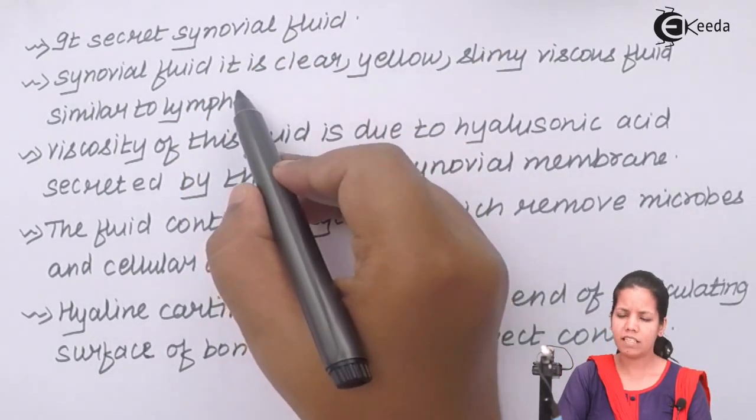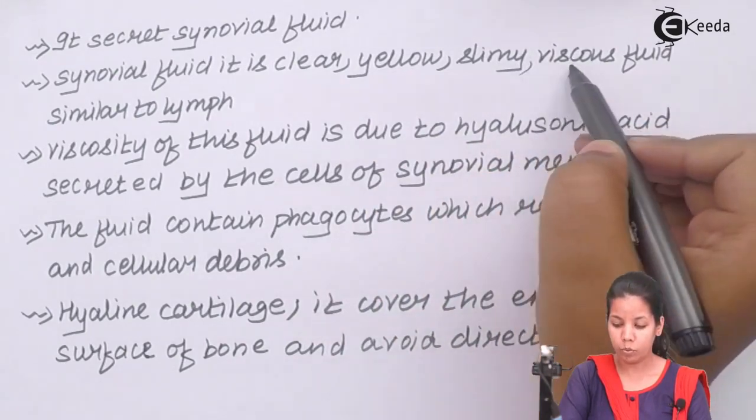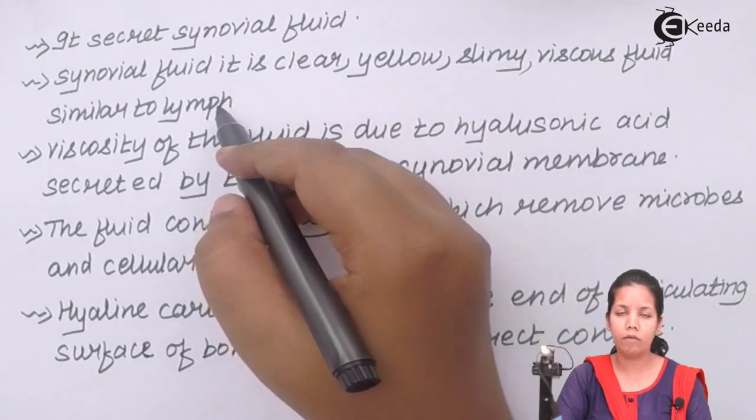Synovial fluid is a clear, yellow, slimy, viscous fluid that's similar to the lymph of your body.